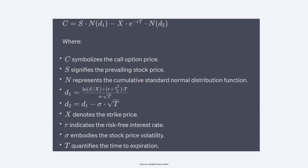Then there is the Black-Scholes model — a continuous time model that provides a closed-form solution for pricing European options. It assumes constant volatility and interest rates, and that the underlying asset follows a log-normal distribution. These are the kinds of assumptions we have to consider for each model — the underlying assumptions which might affect the model when choosing or deciding on a model.